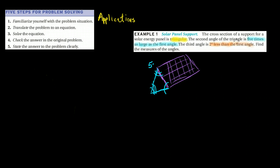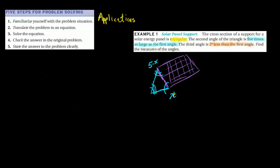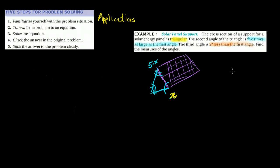It doesn't say. So let's use an x to denote the first angle. And so if the first angle is x and the second angle is five times that, then that one is 5x. In fact, let's do that. Let's do our first angle in yellow, our second angle in blue.